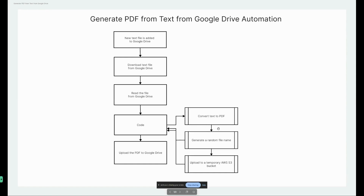The first thing we're going to do is convert text to PDF, then generate a random file name so we can use it later when we upload to Google Drive. We're also going to upload to a temporary AWS S3 bucket, using that random file name so everything is unique and we have a history of the files generated. Once that's done, we'll take the S3 link and upload it to Google Drive — that's the end of the automation flow.